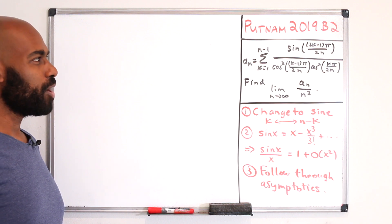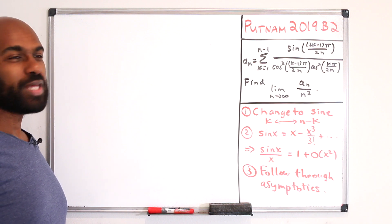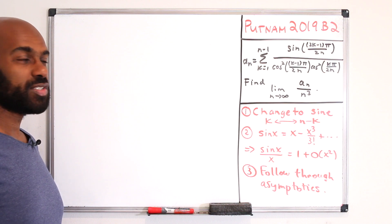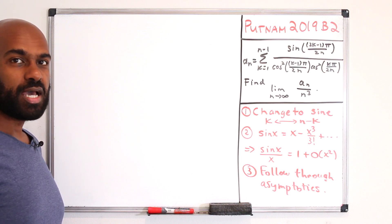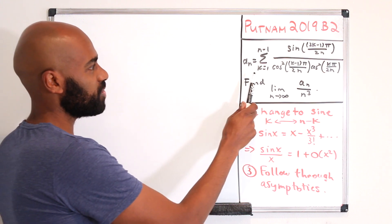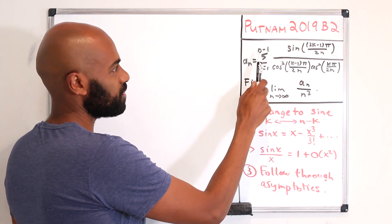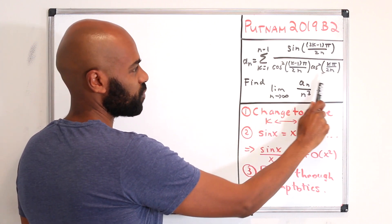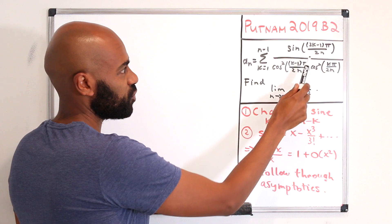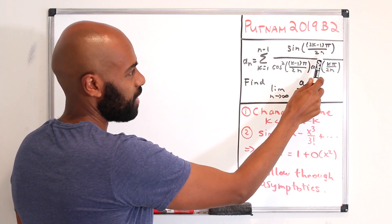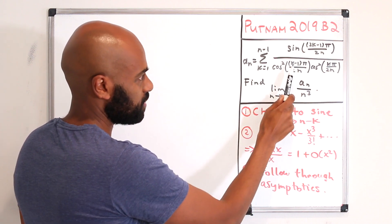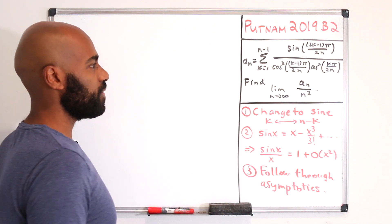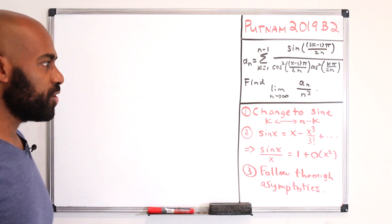Welcome to today's video. I'm Prof Omar. Today we're going to discuss Putnam 2019 number B2, a problem that involves a sum of trigonometric functions and asks for a limit involving them. We'll let a_n be the sum from 1 to n minus 1 of this trig function — sine divided by squares of cosines. It asks us to find the limit as n approaches infinity of a_n over n cubed.